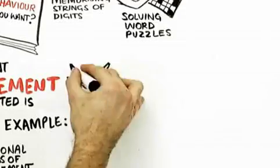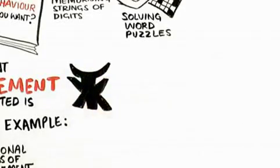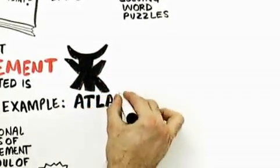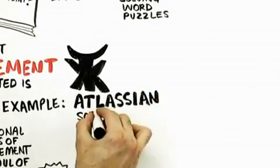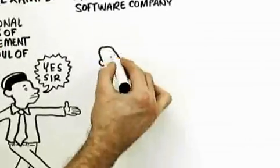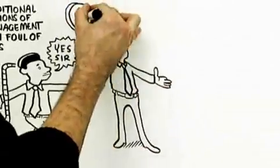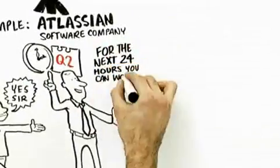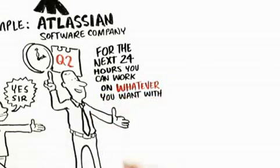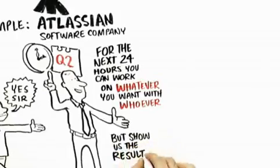Let me give you some examples of almost radical forms of self-direction in the workplace that lead to good results. Let's start with this company, Atlassian, an Australian software company. They do something really cool. Once a quarter, on a Thursday afternoon, they say to their developers: for the next 24 hours, you can work on anything you want, you can work on it the way you want, you can work on it with whomever you want.